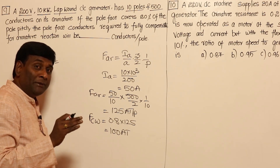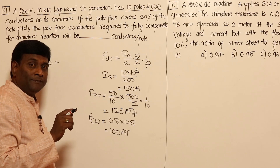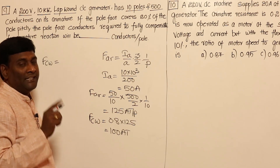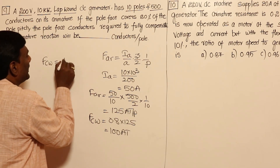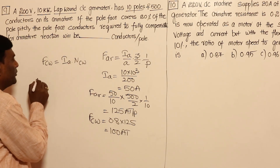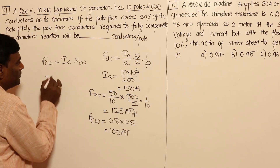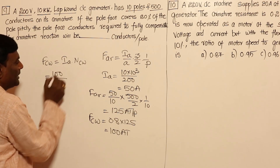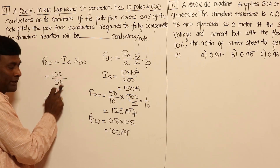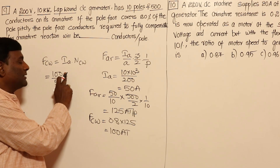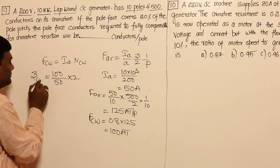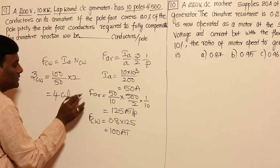The compensating winding carries the full armature current of 50 amperes. Number of compensating turns per pole = 100 / 50 = 2 turns. Since conductors = turns × 2 = 4 conductors per pole. Problem solved.